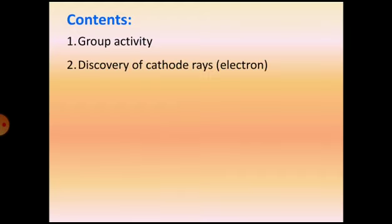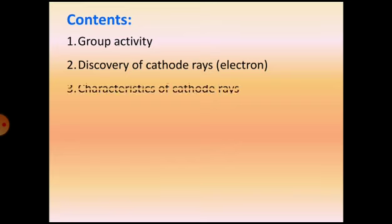Let us look at the contents of today's class. First, we are going to see an activity, and from that activity we will learn something. Second, the discovery of cathode rays or electrons — we will focus on how cathode rays are produced. And next, the characteristics of cathode rays, that is, the properties of cathode rays.